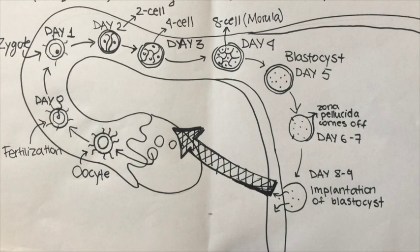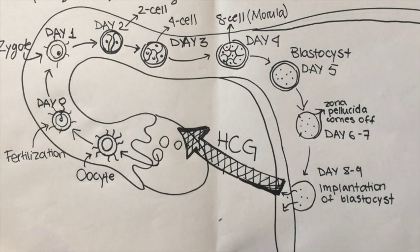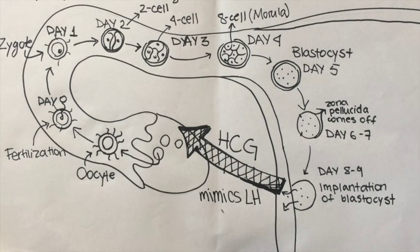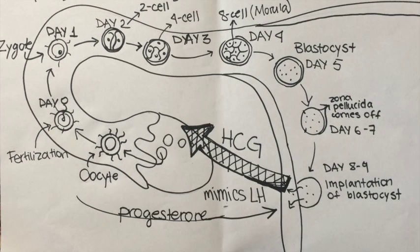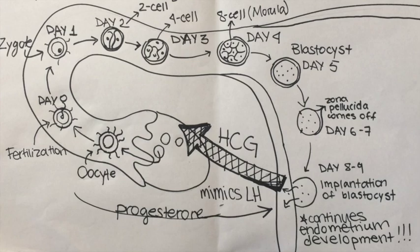The implantation of the blastocyst causes the release of a hormone called HCG, and this hormone mimics another hormone in the regular cycle which is called LH. The function of LH — which is now the function of HCG — is to produce progesterone, and the function of progesterone is to continue the development of the endometrium, the uterus lining.